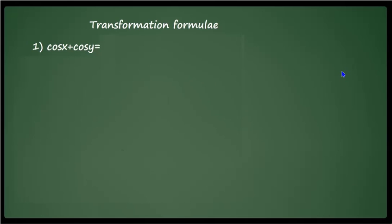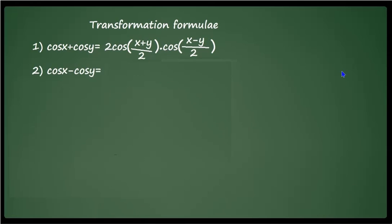Hello students. In the last video we derived some important formulae called transformation formulae. These formulae are used in solving questions, so before solving let us recall them. The first formula is cos x + cos y = 2 cos((x+y)/2) · cos((x−y)/2), and the second formula is cos x − cos y = −2 sin((x+y)/2) · sin((x−y)/2).